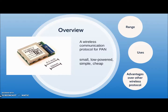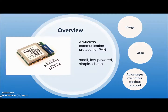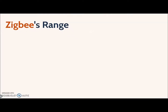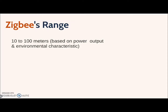So how does it communicate? The common Zigbee module has a physical range of 10 to 20 meters, but transmission can reach up to 100 meters depending on power output and environmental characteristics.